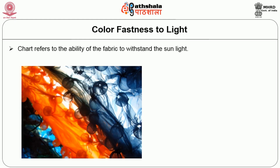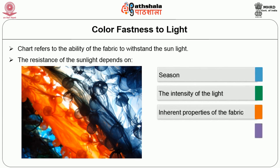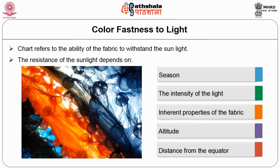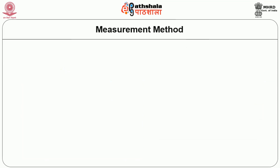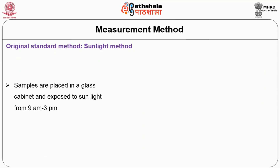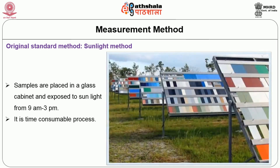Color fastness to light is important because the whole day a garment is exposed to sunlight or other light sources. Light influences color variations in the fabric. Resistance to sunlight depends on the season — summer, winter, autumn — as well as the intensity of the light and distance from the equator. There are two methods: the original standard method using sunlight, where samples are placed in a glass cabinet and exposed from 9 a.m. to 3 p.m. This is a time-consuming process.